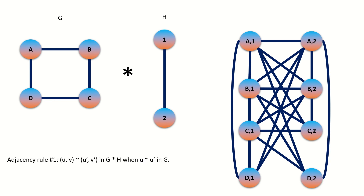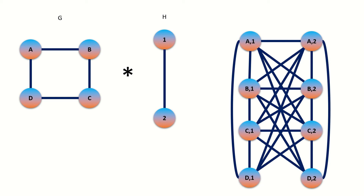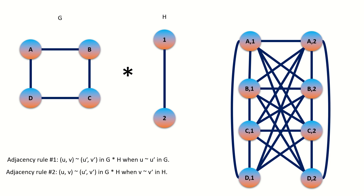By the first adjacency rule, vertex C2 will connect to vertices B1, B2, D1, and D2. By the first adjacency rule, vertex D1 connects to A1, A2, C1, and C2. By the second adjacency rule, D1 connects to vertices A2, B2, C2, and D2.